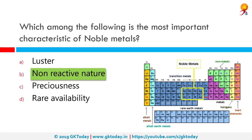The short list of chemically noble metals comprises ruthenium, rhodium, palladium, silver, osmium, iridium, platinum, and gold. More inclusive lists include one or more of mercury, rhenium, and copper as noble metals.